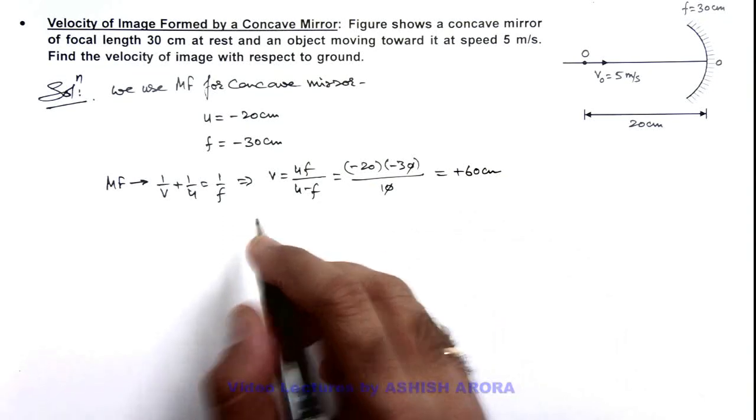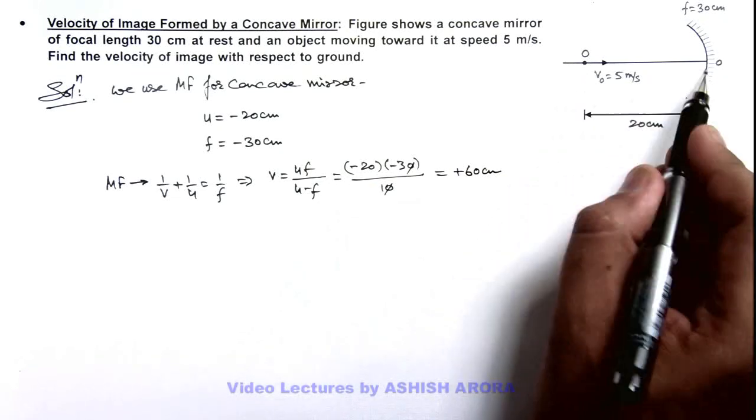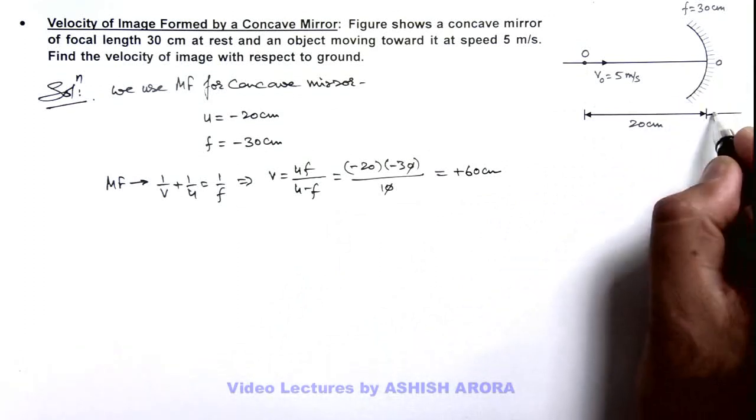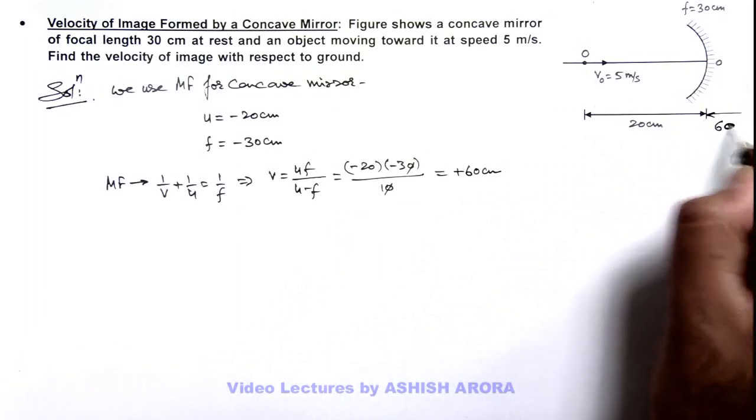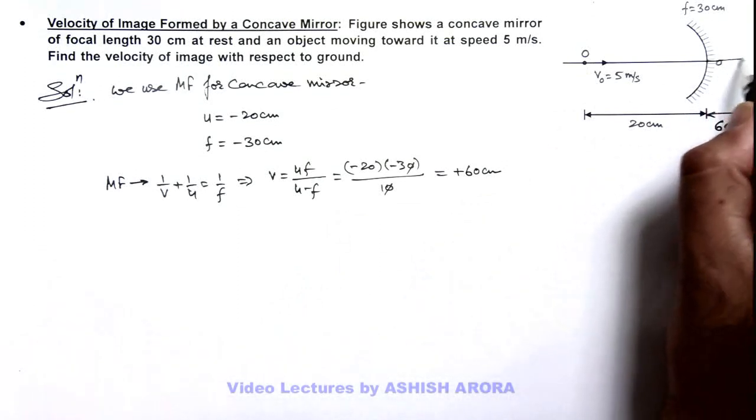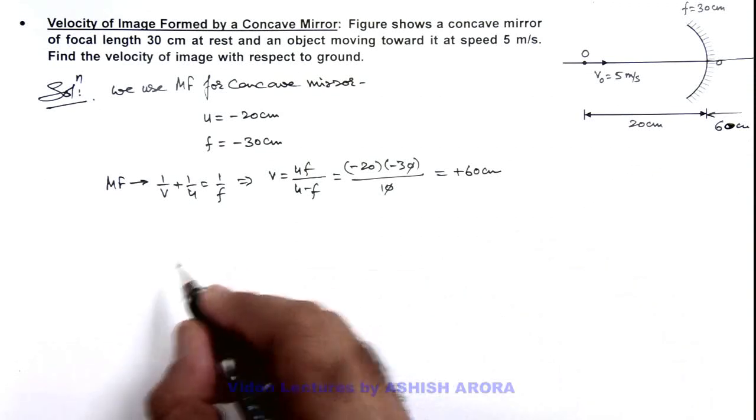That means in this situation the image of object is from behind the mirror at a distance of 60 centimeter from the pole of this mirror. It is at the back of the mirror on this principal axis.